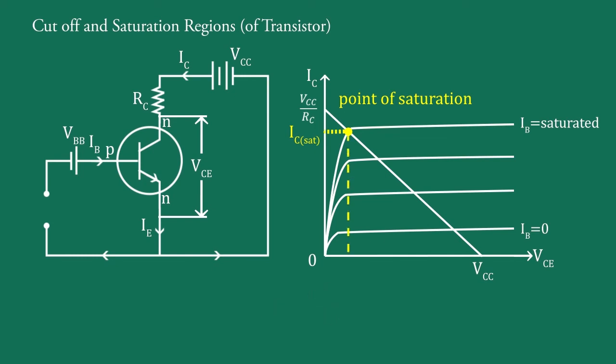The collector-emitter voltage corresponding to the point of saturation is known as knee voltage and is denoted as V knee.